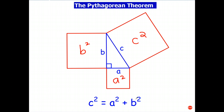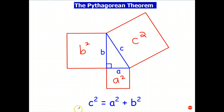Here's the Pythagorean theorem written as an algebraic equation: c squared equals a squared plus b squared. That's the form we'll be using. It's a good idea to always remember that this comes from the areas of the squares on the sides of a right-angled triangle. In the next video we'll prove to you that this theorem holds for all right-angled triangles.